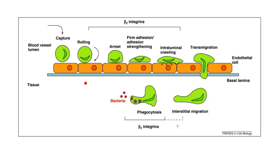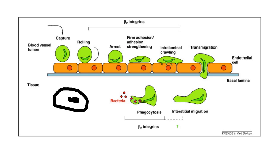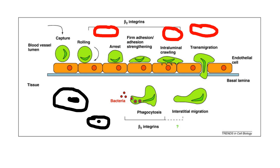Down here in the lower right, that's interstitial tissue. Neutrophils do this. But red blood cells cannot do that. Red blood cells cannot undergo diapedesis — you have to have a brain to undergo diapedesis, and the brain is the nucleus. Red blood cells don't have a nucleus.